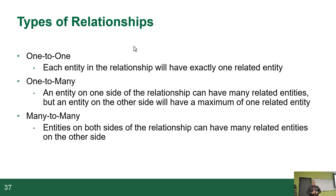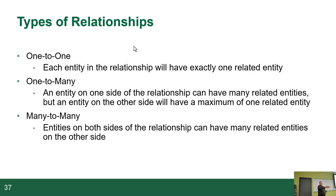In database design, we have three kinds of relationships. We have one-to-one, where each entity participating in a relationship can only exist once. A one-to-one relationship that applies to all of you is student U-pass. Each student has one U-pass; each U-pass belongs to one student. They're both separate entities, but it's a one-to-one relationship.